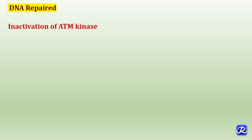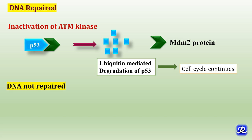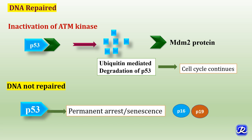Once the DNA is repaired, it leads to inactivation of ATM kinase, which in turn leads to dephosphorylation of P53. MDM2 protein can then form a complex with P53 and causes ubiquitin-mediated degradation of P53, allowing the cell cycle to continue. But if the DNA is not repaired, P53 causes permanent arrest or senescence of the cell by increasing transcription of proteins P16 and P19. P53 can also cause cell death by apoptosis if DNA damage is irreparable.